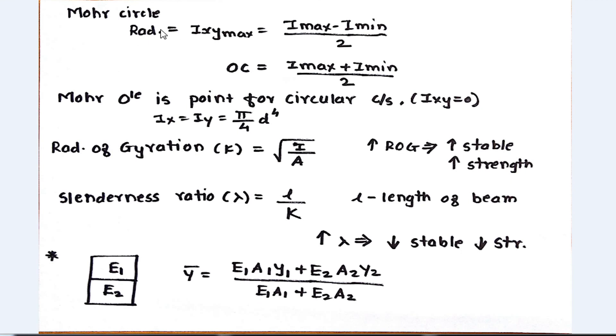Next is Mohr circle in terms of moment of inertia. Radius of Mohr circle is Ixy maximum equals Imaximum minus Iminimum divided by 2.